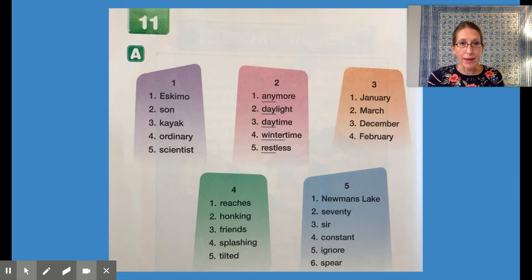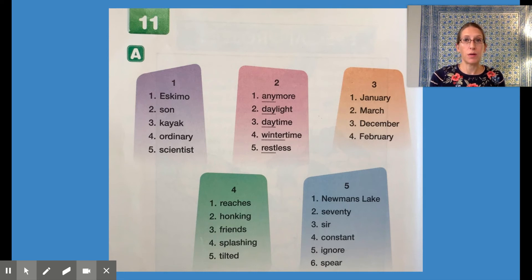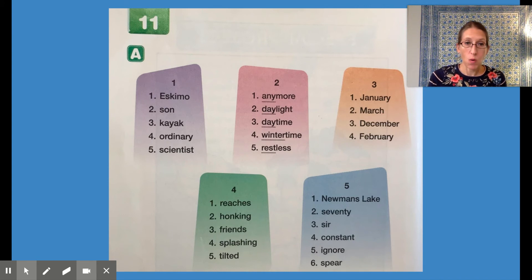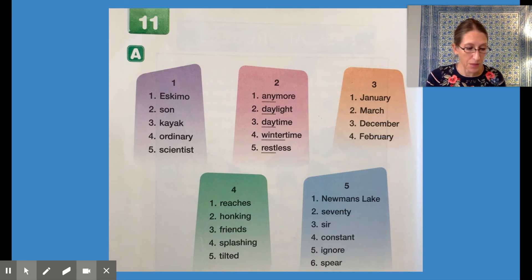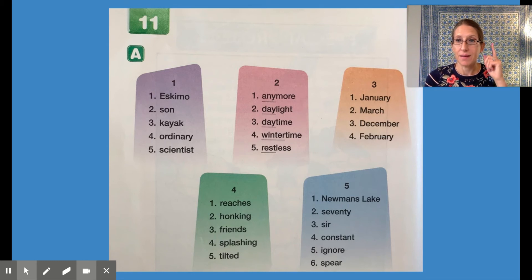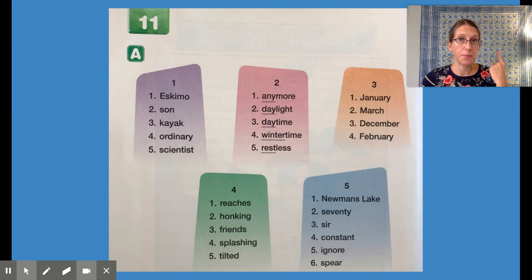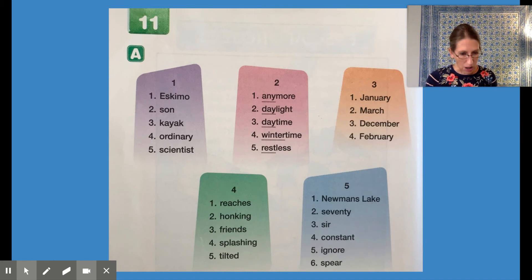Word three is kayak. Word four is ordinary. Word five is scientist. Nice work. Let's read those the fast way, starting with word one: Eskimo... Son... Kayak... Ordinary... Scientist. Nice job.